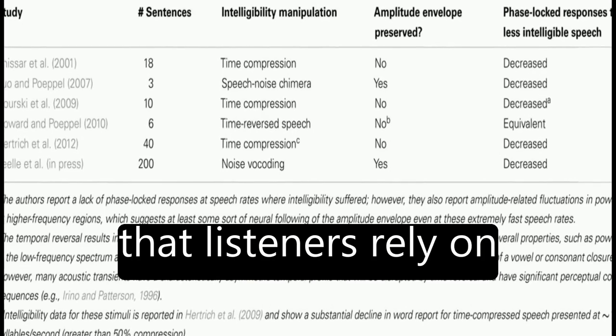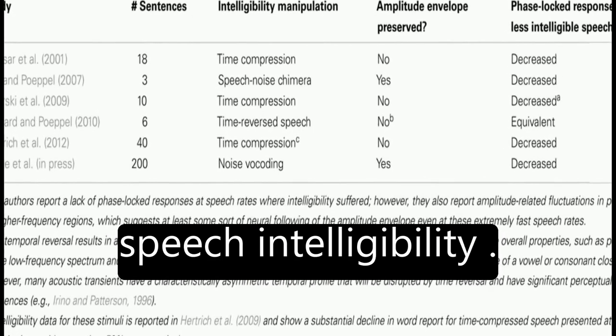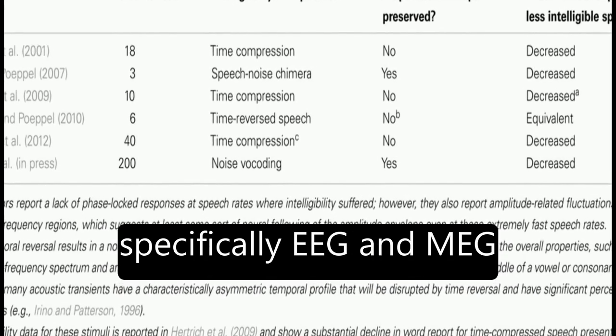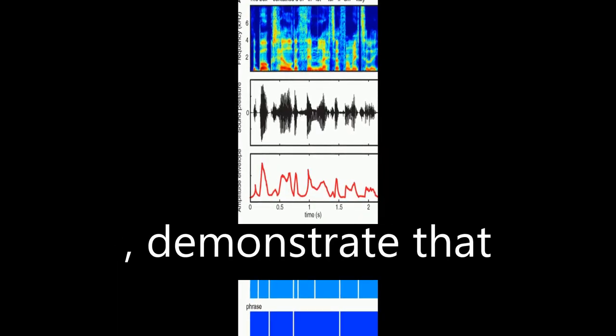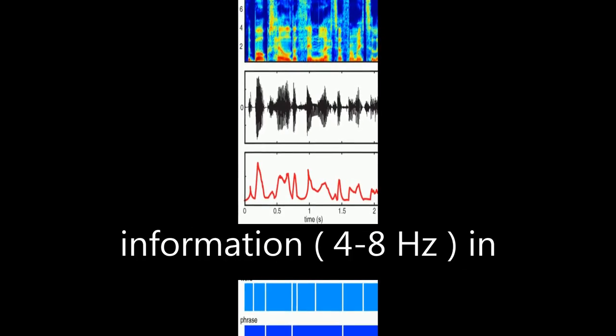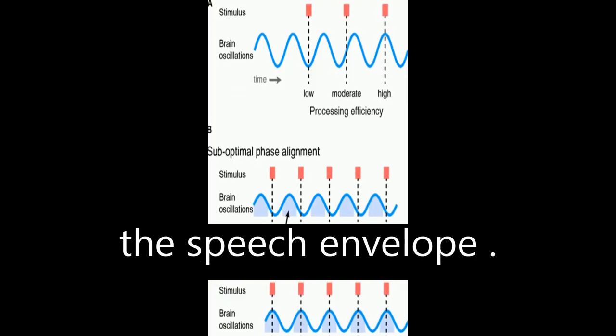Behavioral studies show that listeners rely on this information for speech intelligibility. Neuroimaging data, specifically EEG and MEG, demonstrate that ongoing cortical oscillations phase lock to low-frequency information, 4 to 8 Hz, in the speech envelope.